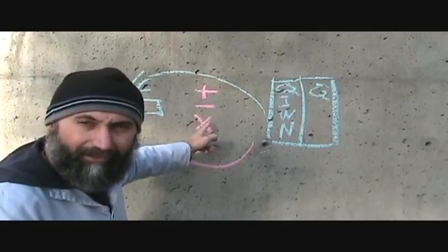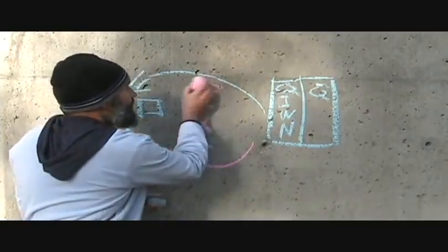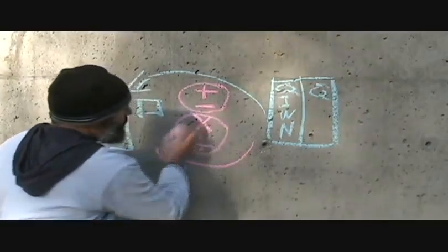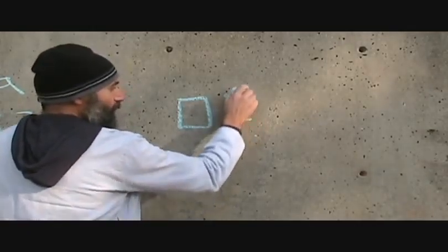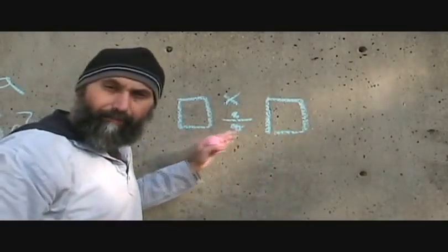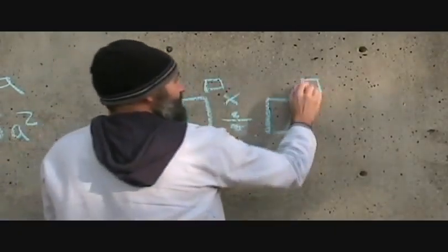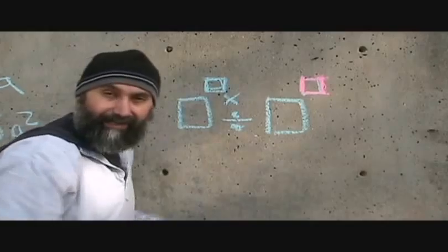Sometimes it's easier to do multiplication and division, sometimes it's easier to do subtraction and addition. We're going to group addition and subtraction together, and group multiplication and division together. For multiplication and division, the base has to be the same — that's all you need. The exponent can be anything. So as long as the base is the same, the exponents can be anything — they don't have to be identical, unlike adding and subtracting.